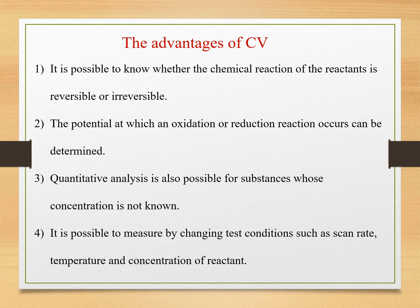Next, we can have a look at the advantages of cyclic voltammetry. First, it is possible to know whether the chemical reaction of the reactant is reversible or irreversible. Second, the potential at which an oxidation or reduction reaction occurs can be determined. Third, quantitative analysis is also possible for substances whose concentration is not known. Fourth, it is possible to measure by changing test conditions such as scan rate, temperature and concentration of the reactant.